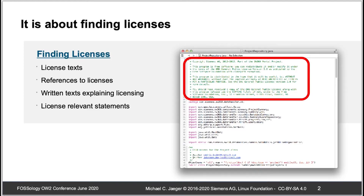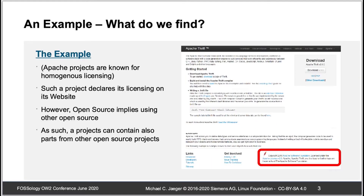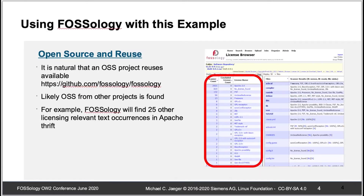Why would you need to look for license statements in a package? Because many open source projects declare their licensing on their homepage. But if you look inside packages — for example Apache Thrift — and you use FOSSology, you will find many different licenses. That's natural because open source software is comprised of contributions by different parties who may have used different licensing.